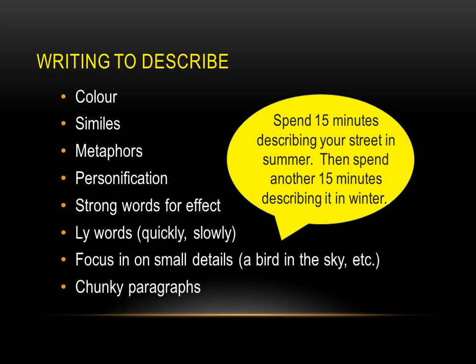Writing to describe: use colour, similes, metaphors, and personification — giving an object a human quality, such as 'the candle danced in the moonlight' or 'the trees waved their branches.' Use strong words for effect, '-ly' words such as quickly and slowly, and focus on small details — for example, a bird in the sky — writing a whole paragraph zooming in on that one small feature. Use chunky paragraphs of at least three sentences on the same topic before moving on.